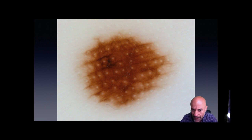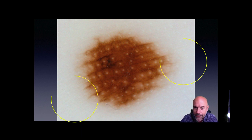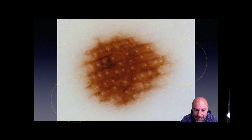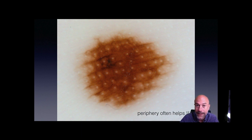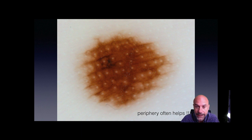In the next example, we can see that in the central part of the lesion there is a lot of pigmentation — practically everything is pigmented, both the furrows and the ridges — so we cannot decide. But if we focus our attention at the periphery of the lesion, we will realize that the pigmentation has the tendency to follow the furrows and not the ridges. The periphery often helps, especially in very intensely pigmented lesions.